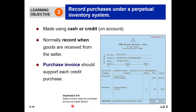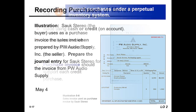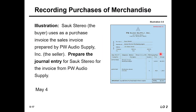Here is Illustration 5.6: a sales invoice used as a purchase invoice by Sauk Stereo. Sauk Stereo is the purchaser and PW Audio Supply Incorporated is the seller. This illustrates recording purchases of merchandise — Sauk Stereo, the buyer, uses the sales invoice prepared by PW Audio Supply as its purchase invoice.